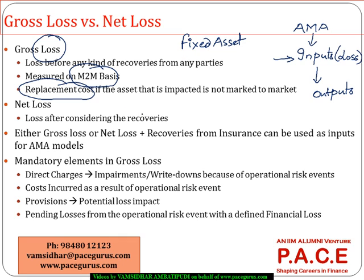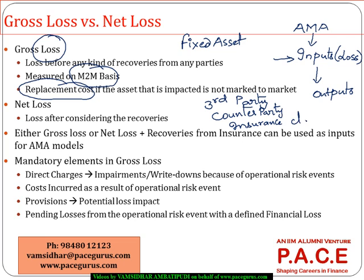After adjusting for all the recoveries — the recovery could be from some third parties, from the counterparty through a court settlement, or it could be through insurance claims — whatever are the recoveries, after those recoveries, whatever loss is still outstanding for the party is what we call the net loss.